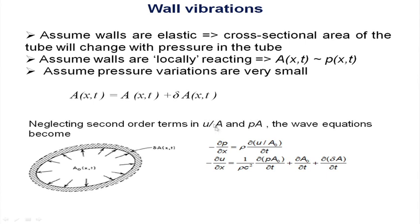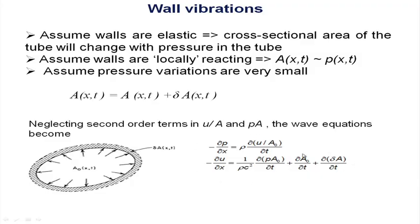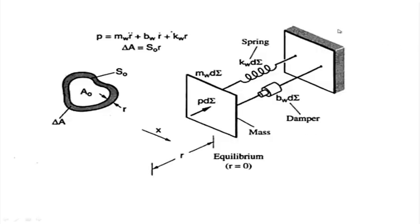Now, instead of U, A, and rho with A fixed in the wave equation, A is modified. If I substitute A₀(x,t) into del A(x,t), the modified equation results. I will not go into the detailed mathematical derivation. The tube wall is made of muscles, which act as a spring-mass mechanical oscillator.